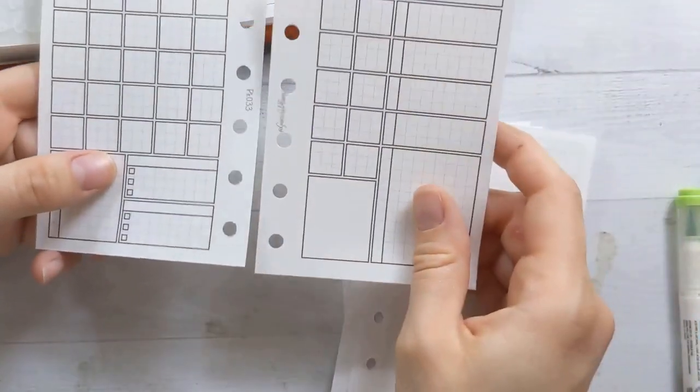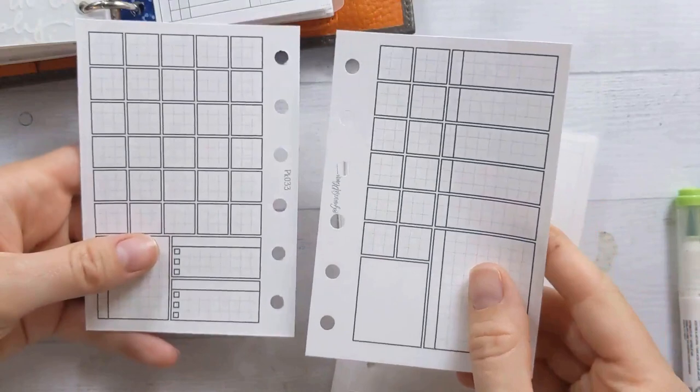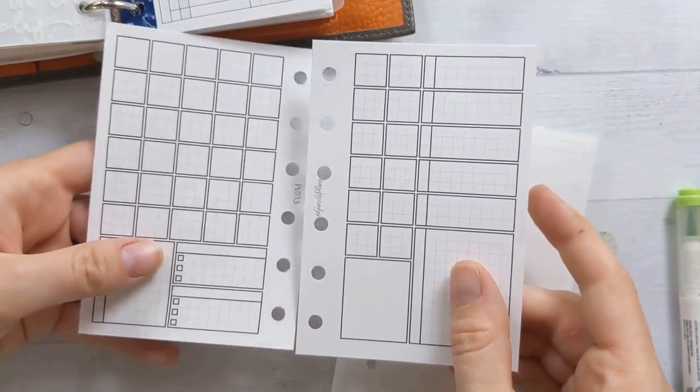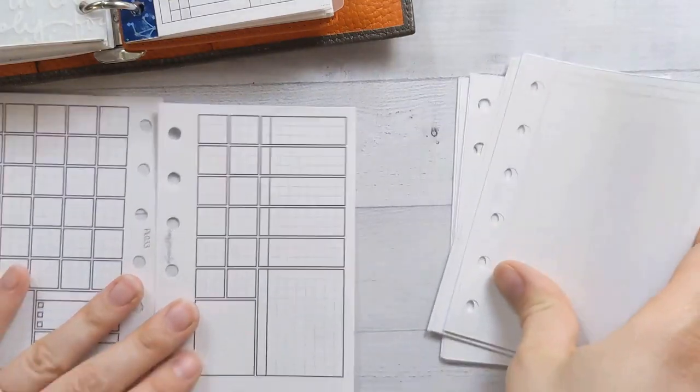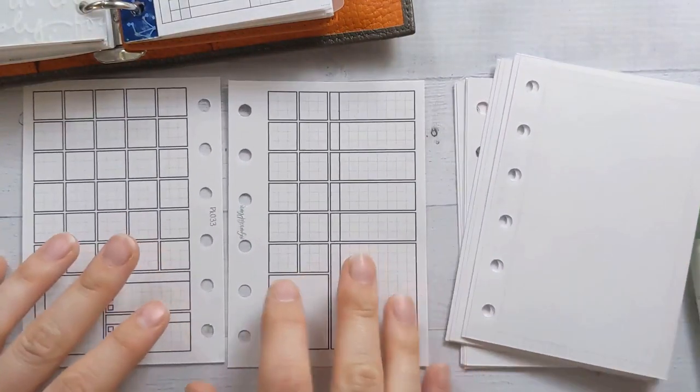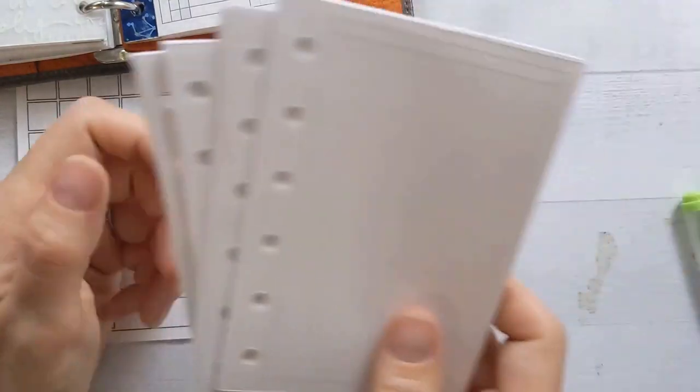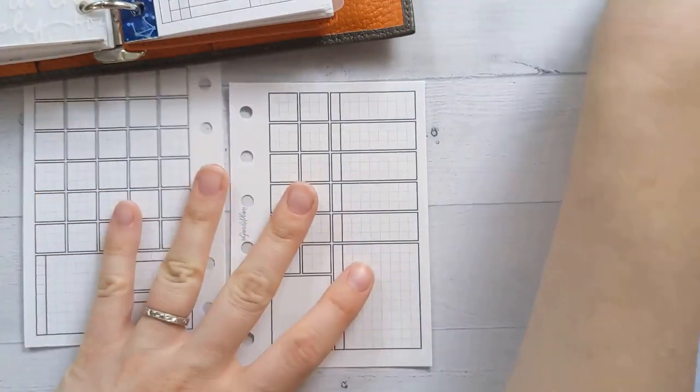This month I'm going to be using again Insert 33 from GenjiPlans.com/shop. The grid monthly worked well for me and so I'm going to try that again before moving on to something else. Then I'll show you my weekly setup, at least what I have picked out for this month's worth of weeklies at the end of the video.